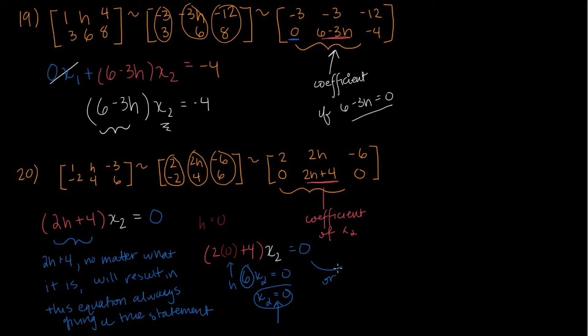Or in the special case that h equals negative two, we could say that two times negative two, again, I'm just plugging into this equation right here, two times negative two plus four times x2 equals zero, which is zero times x2 equals zero, which still gives us a true statement of zero equals zero. So either way, we have a true statement, whether x2 equals zero, or zero equals zero, no matter what we plug in for h.